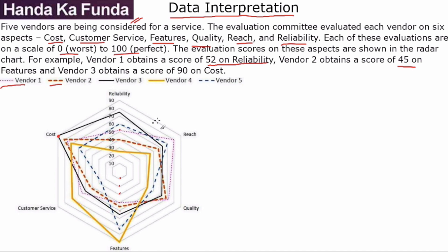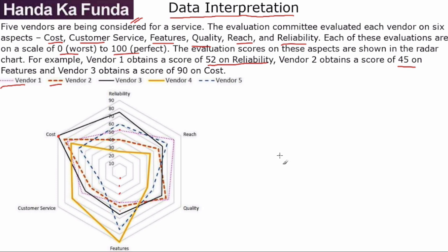When you have to solve questions for this, one idea is that you make everything into a table, with cost, reliability, and all the aspects on one side, and vendors 1 through 5 on the other side, and write down all the data. That would be a sure-shot way to do this question, but also a sure-shot way to waste a lot of your time. You should look at the questions and only note down the data that is relevant for you.